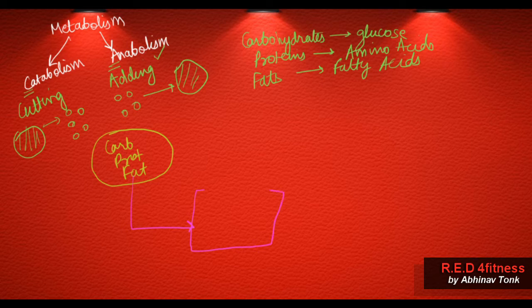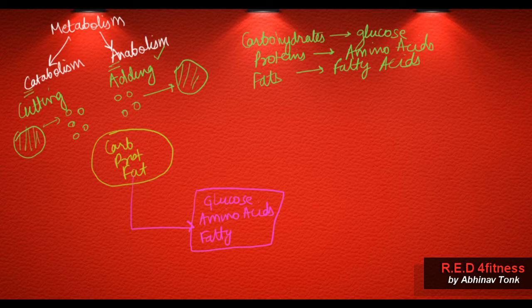When we eat food, through digestion the macronutrients are broken down to component level: carbohydrate is broken down into glucose, protein is broken down into amino acids, and fats are broken down into fatty acids. Then these component-level molecules build up into the macronutrients which are required in our body.